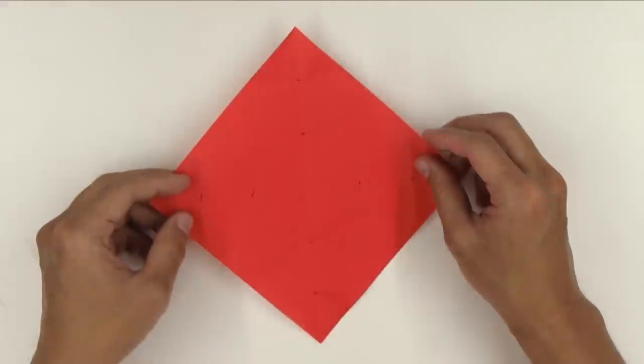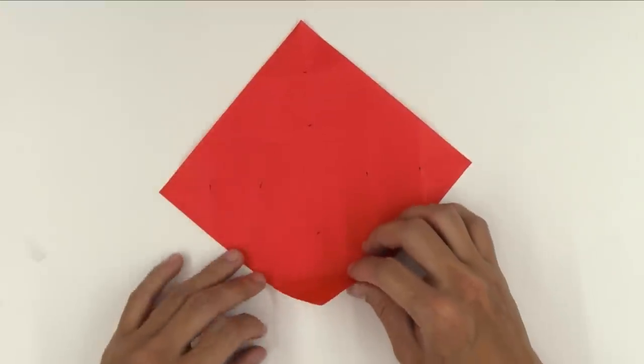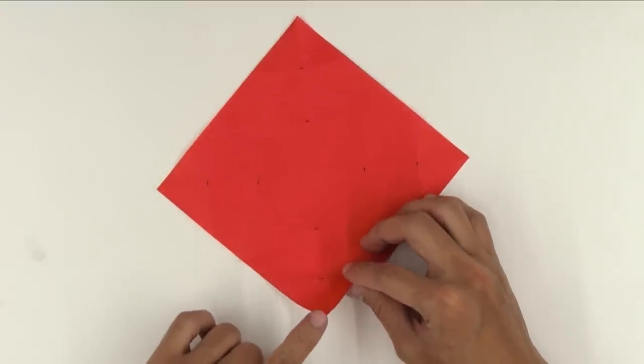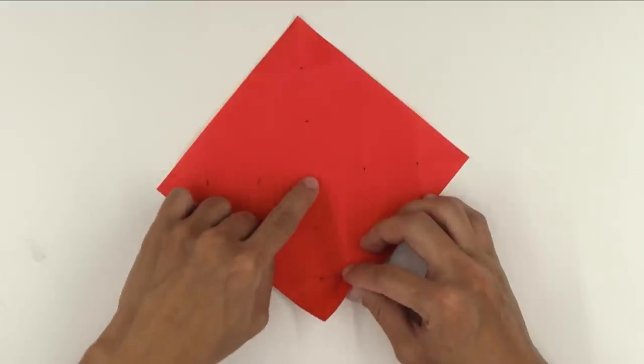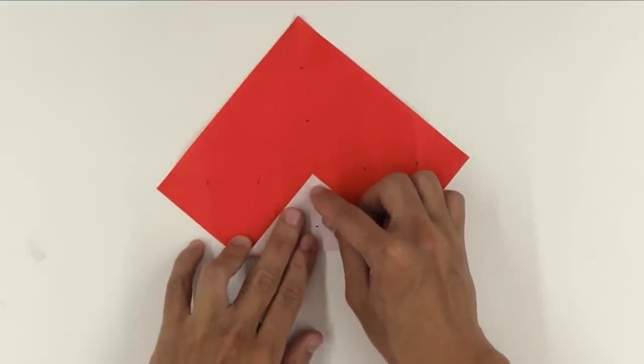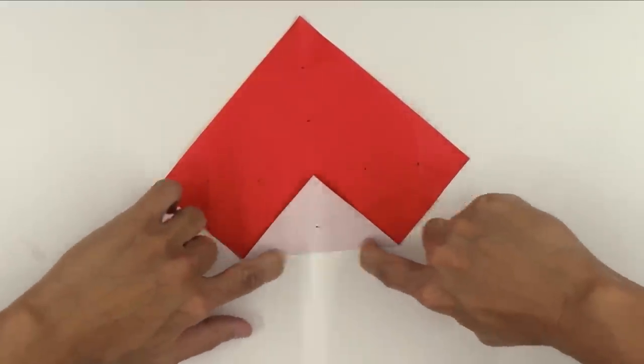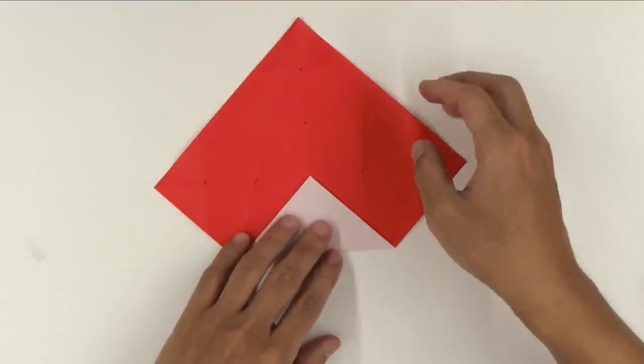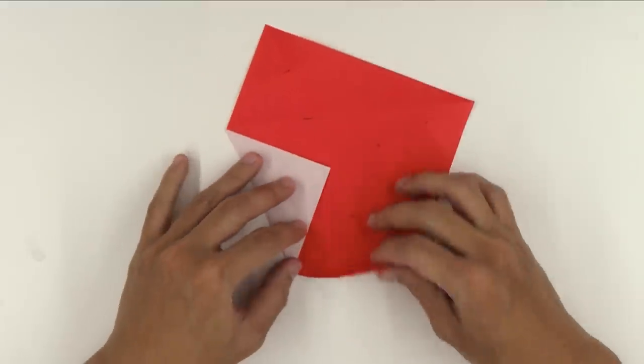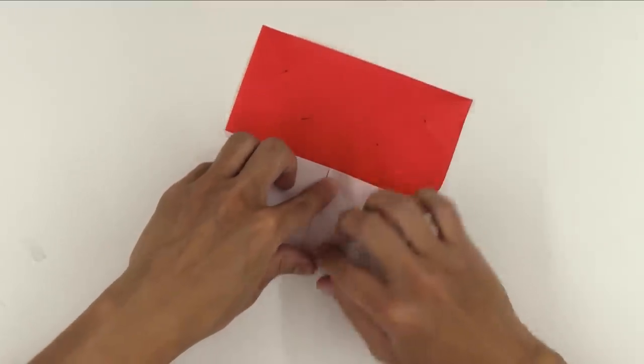Now, turn the model over. Now, fold, making the corner of the paper go up to the middle. Now, do the same thing on all sides.